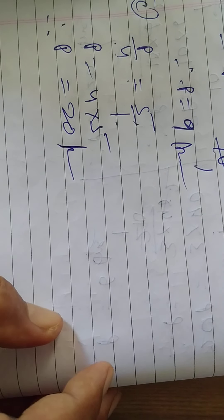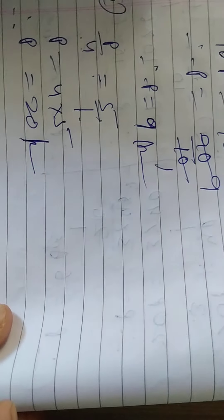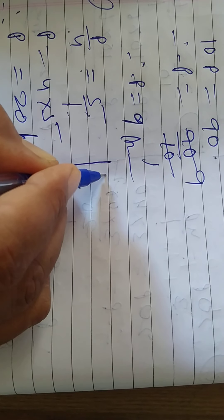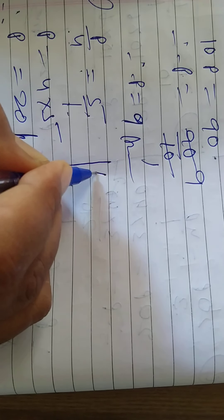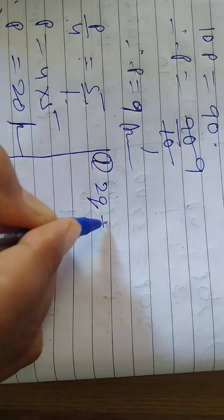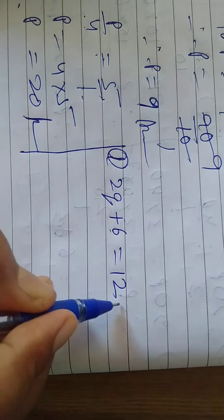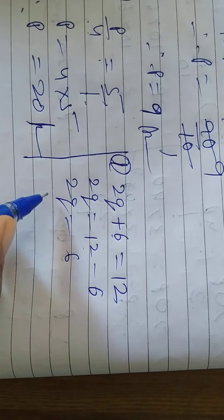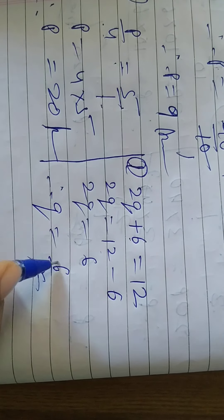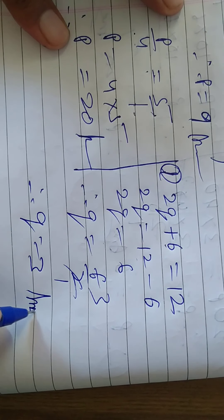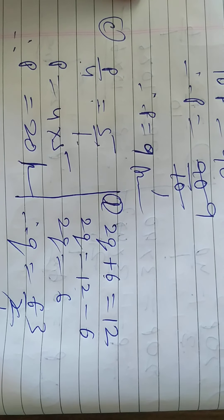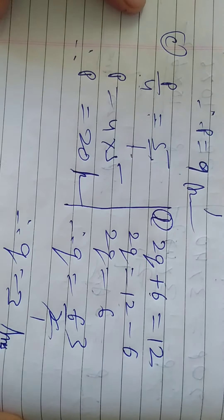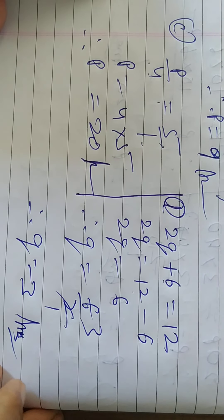Two more slightly difficult questions. In question number 4, the last question is Part L: 2q plus 6 equals 12. Send 6 to the right side: 2q equals 12 minus 6, which is 6. Therefore q equals 6 by 2, and 2 threes are 6, so q equals 3. This way question number 4 is also completed. Some questions are left which are very easy — I know you can solve them. So Exercise 4.2 is totally completed.